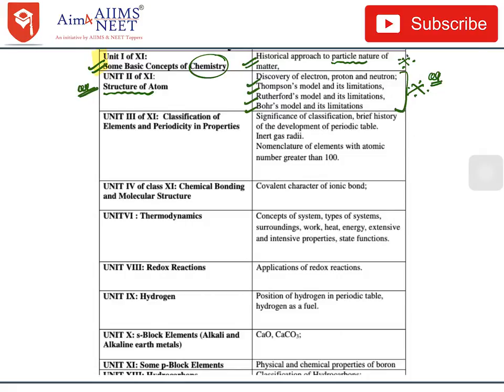Just leave those portions if you are aiming for NEET exam, though these portions are important for other exams like AIIMS. This is totally deleted from the NTA/NEET 2019 UG exam syllabus. Unit 3 — Classification of Elements and Periodicity in Properties — the brief history (names of scientists, year of discovery), significance of classification, development of periodic table, inert gas radii, and nomenclature of elements with atomic number greater than 100 have all been deleted.